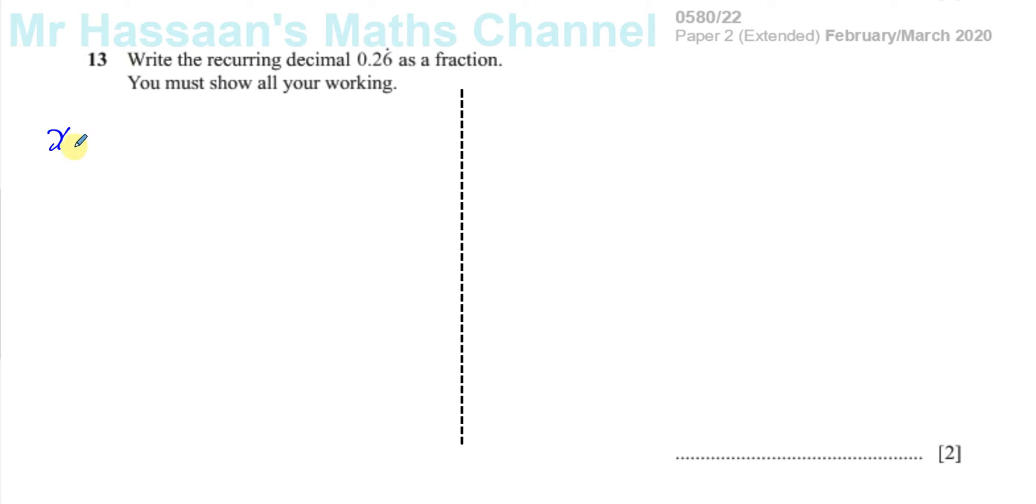One way is to write x equals 0.26. So you're saying let x be 0.26 recurring. So we can then say x is equal to 0.26 like this, with dots to show the recurring pattern. So I want to have two different expressions with this decimal in it.